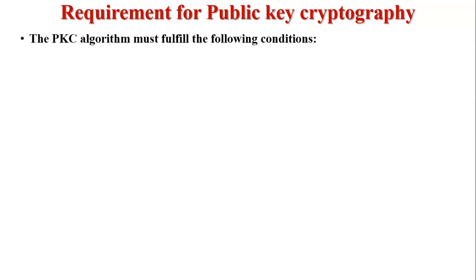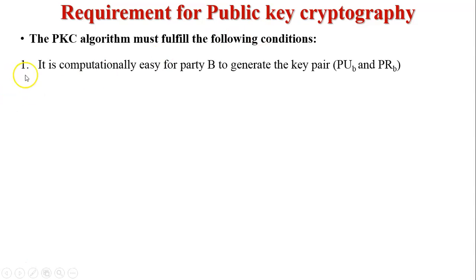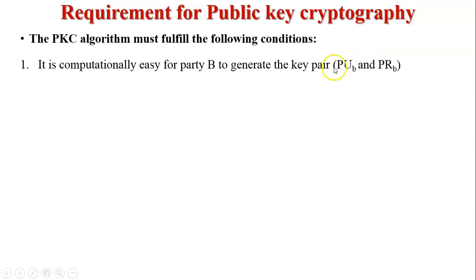The public key cryptography algorithm must fulfill the following conditions. First, it is computationally easy for party B to generate the key pair of pub_B and pr_B. Here pub_B is the public key of user B and pr_B is the private key of user B. The public key will be shared with all users in the network, while pr_B remains secret.